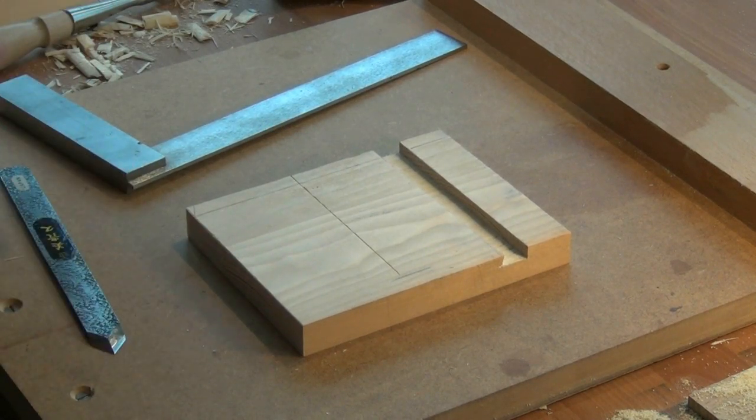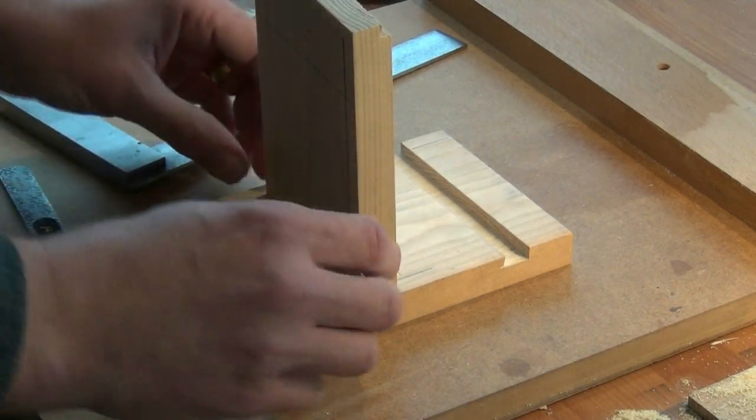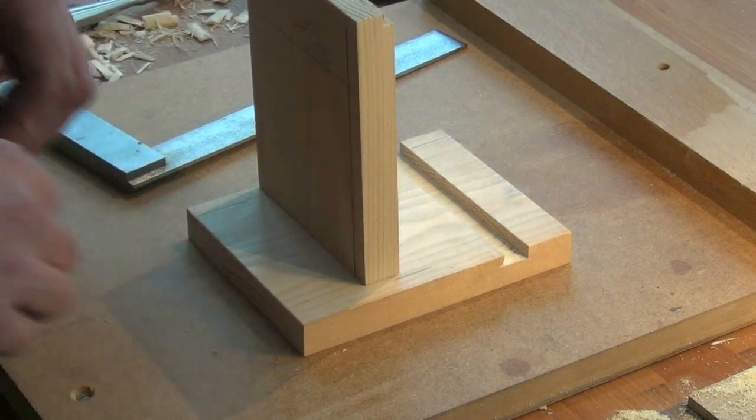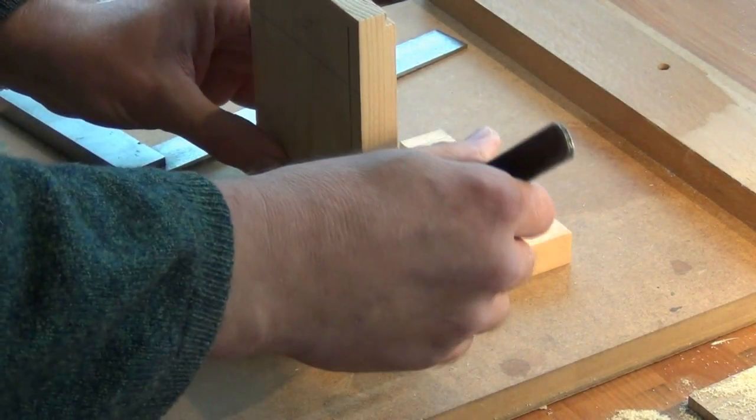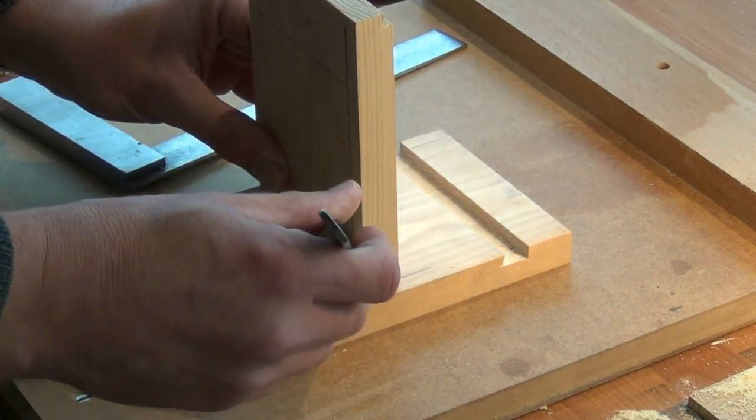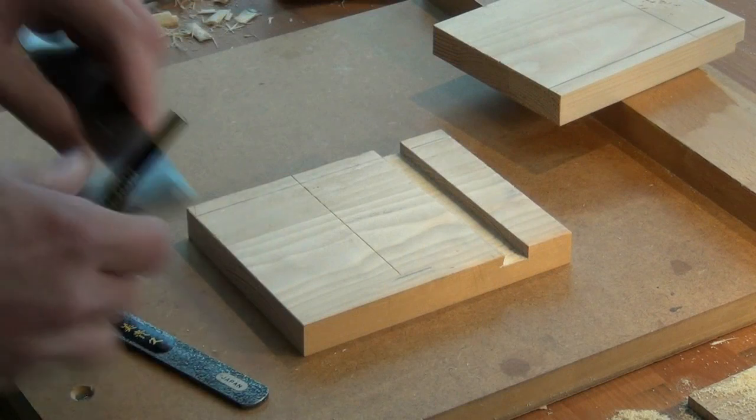You now need to gauge the width of the work. So if I place the shelf up to that knife line, make a little mark, square that across the work.